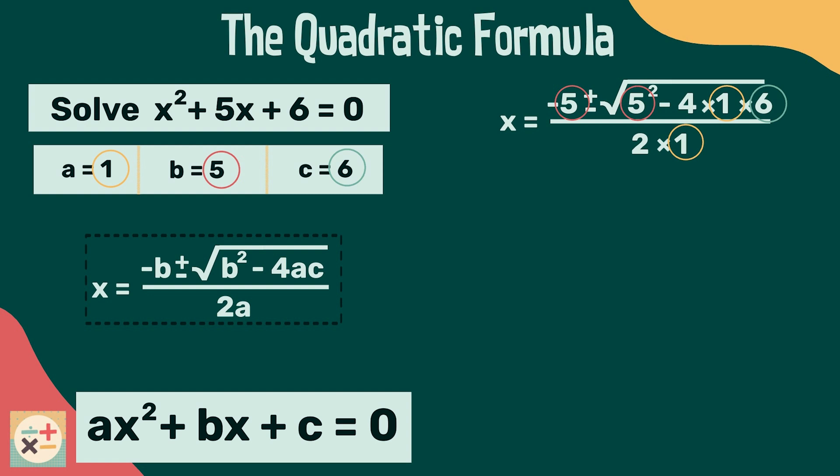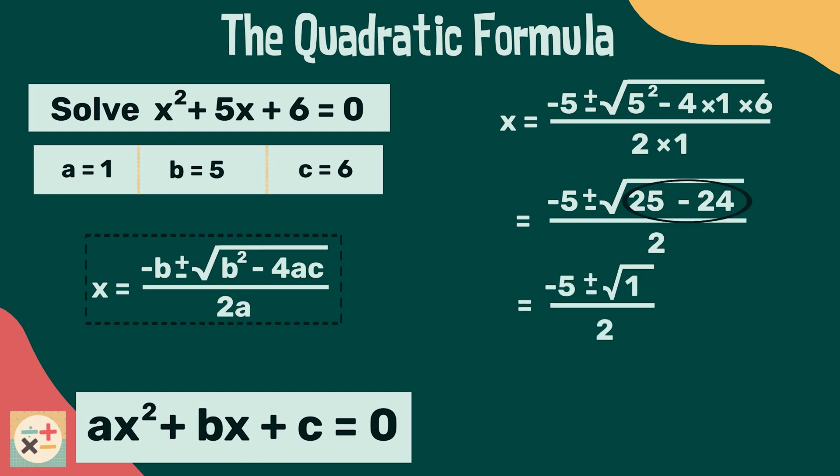Now let's simplify the equation. We can calculate 5 squared, as well as perform the multiplications. Now, inside the square root we can take away 24 from 25, leaving us with the square root of 1.